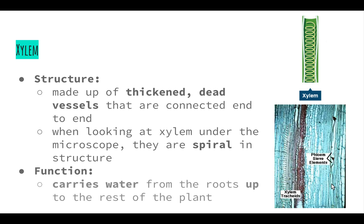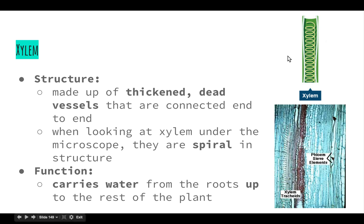The function of xylem is to carry water from the roots up to the rest of the plant. The xylem vessels run the whole length of the plant — even the tallest trees in the forest have xylem running all the way from the roots to the leaves. Basically, the job of the xylem is to carry the water that the plants absorb through osmosis in the roots all the way to the leaves, where the water is then used for the process of photosynthesis.